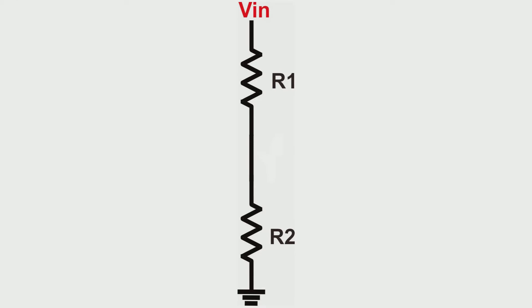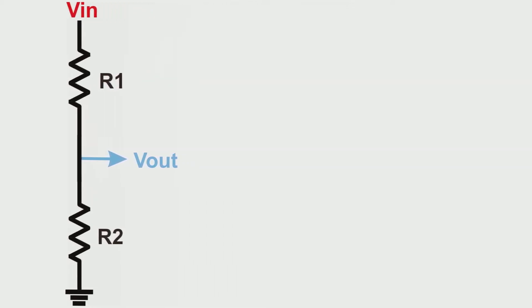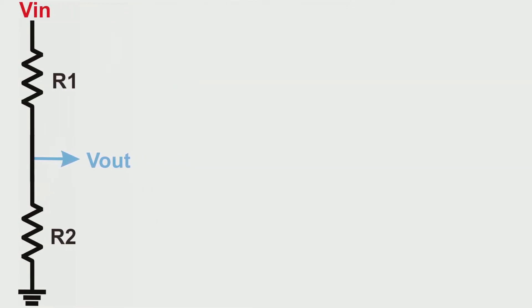This is the circuit. This circuit has the ability to convert resistance to voltage. We can take the voltage output from the middle of R1 and R2. The change of one resistor will change the voltage output. Here is the formula.